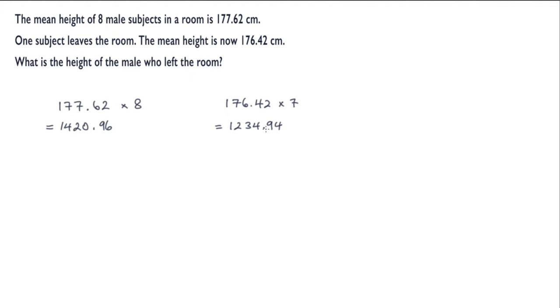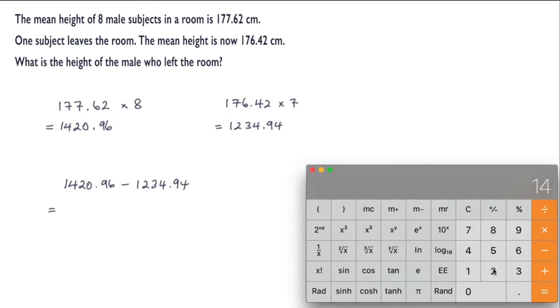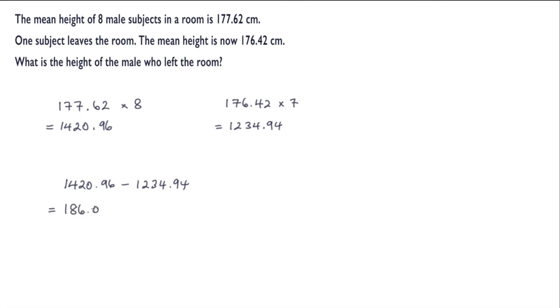Now the last thing we need to do is find the difference between these two lengths. So we have 1420.96 and we're subtracting 1234.94. Pop over to the calculator, and we get 186.02. So the height of the male who left the room is 186.02 centimeters.